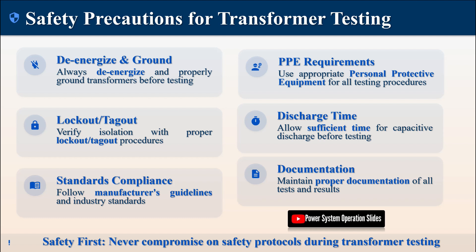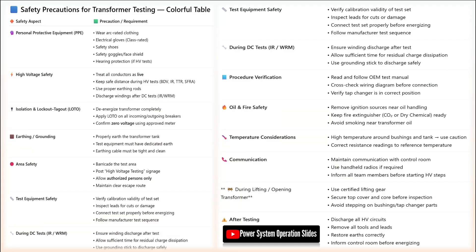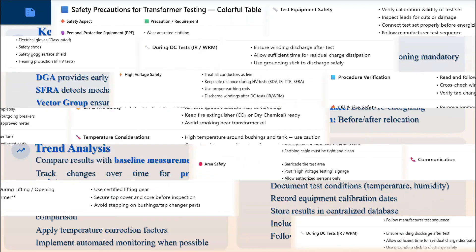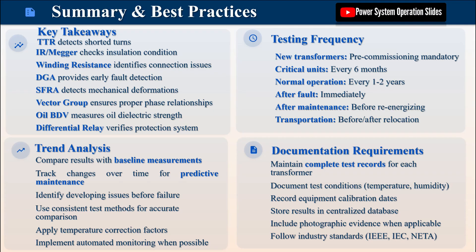Test 6: Vector Group and Polarity Test. The vector group and polarity test confirms the correct phase relationship and vector group of the transformer, which is critical before commissioning to prevent catastrophic failures. This procedure involves applying a single-phase AC voltage to HV terminals and measuring the induced voltages on LV terminals to check phasor relationships. The results are matched to the specified vector group, e.g., DYN11. This test is particularly important when connecting transformers in parallel or when replacing transformers in existing systems. A transformer with an incorrect vector group will cause phase shift errors and must not be energized until the issue is resolved. This test is mandatory during commissioning and should be performed after any major maintenance that might affect winding connections.